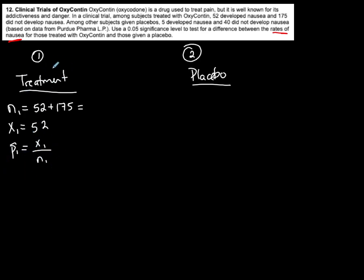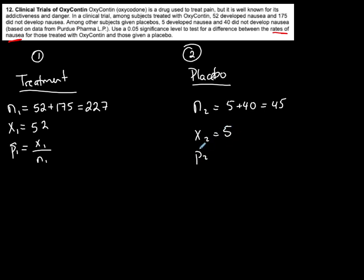We want to know the rates of nausea, so nausea is our success. Success doesn't have to be the better situation — it's just what you want to test. For the placebo group, 5 developed nausea and 40 did not, so N2 = 45 total, and X2 = 5 successes. P2-hat = X2 over N2 — the calculator will compute that for me. Alpha, the significance level, is given as 0.05.